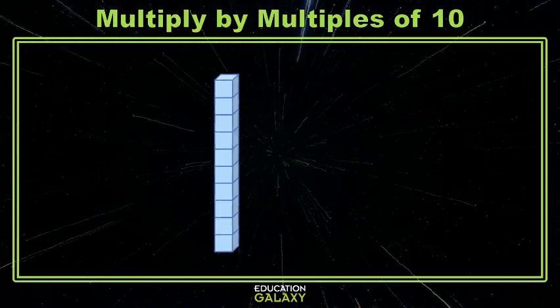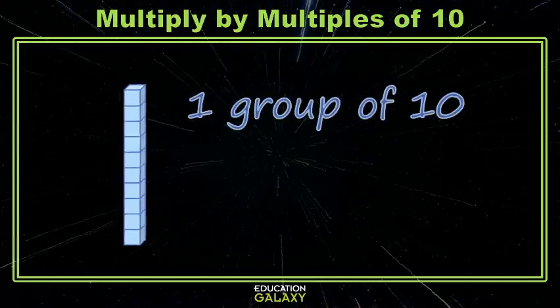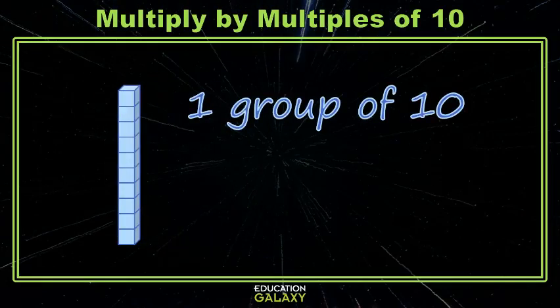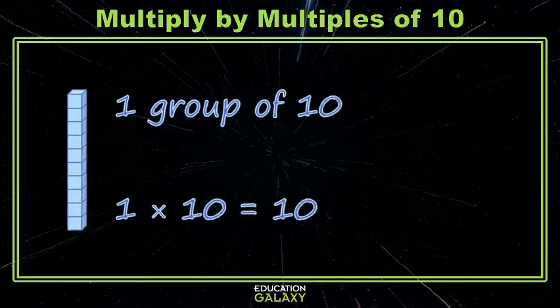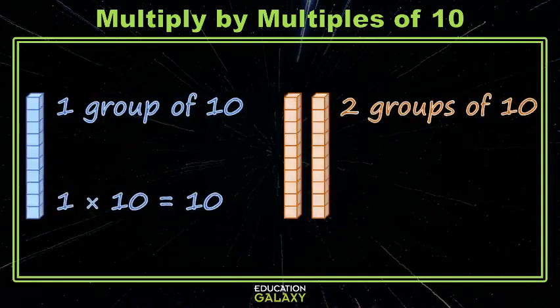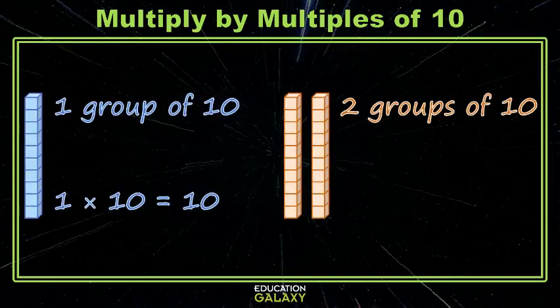What we have here is one group of 10 little cubes, which gives us a total of 10. We know that we can write one group of 10 as 1 times 10, and that gives us 10 of those little cubes. Now, what happens when we have two groups of 10 little cubes?